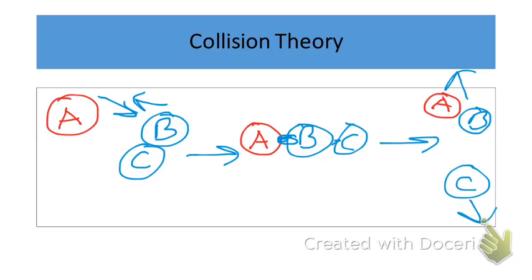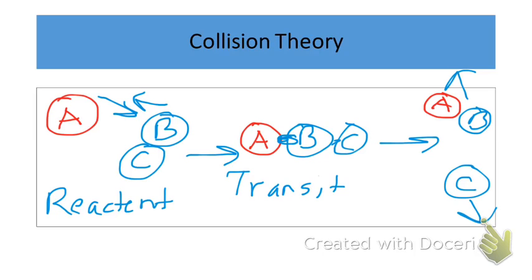In general, the reactants must collide together and those collisions must be successful. That creates the transition state in between, and then finally we have our products. That's the course direction of a chemical reaction: reactants → transition state → products.